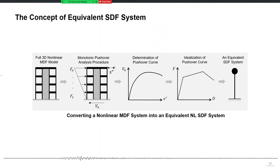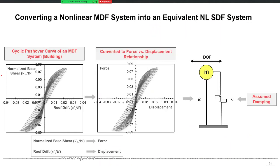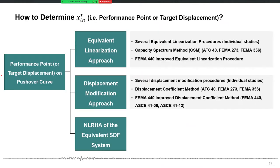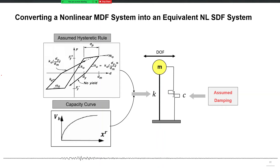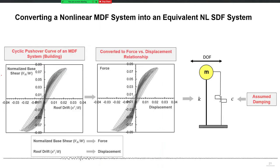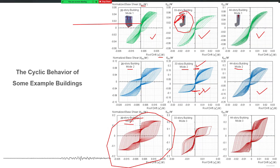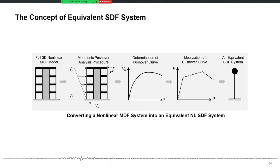One last thing before we go to ETABs, and that is the concept of converting a multiple degree of freedom system into an equivalent single degree of freedom system. That concept is also associated with the use of pushover analysis.